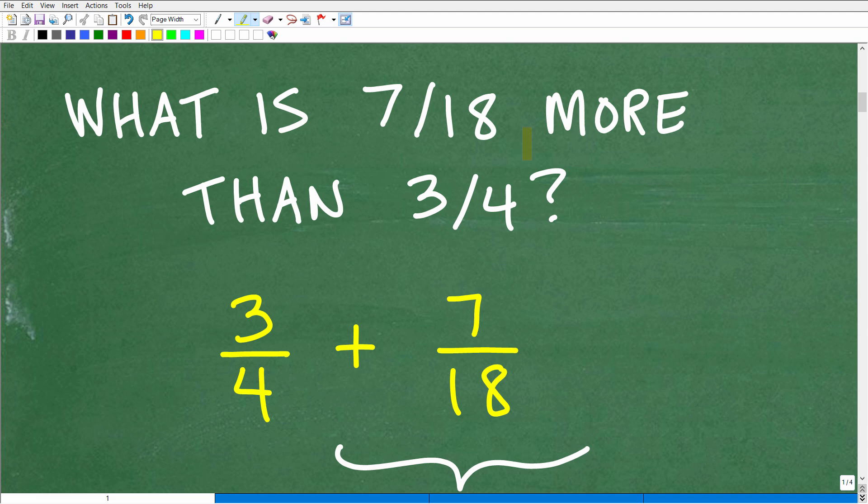So what is 7/18 more than 3/4? Well, let's interpret this. So 7/18 more than what? Well, than 3/4. So 7/18 more than 3/4, what does that mean? Well, here is 3/4, and then 7/18 more would be we'll just add 7/18 onto the 3/4.